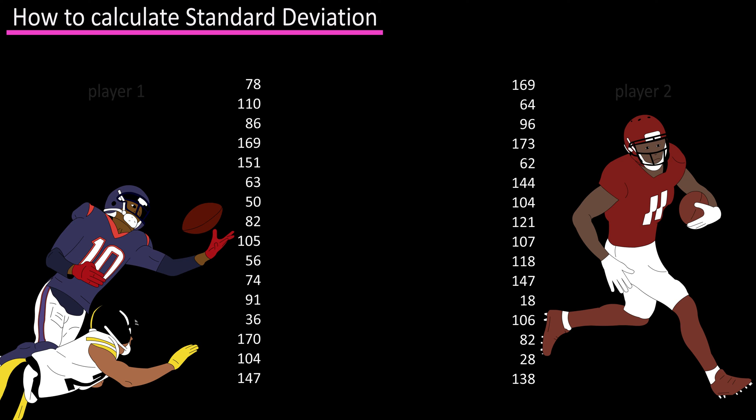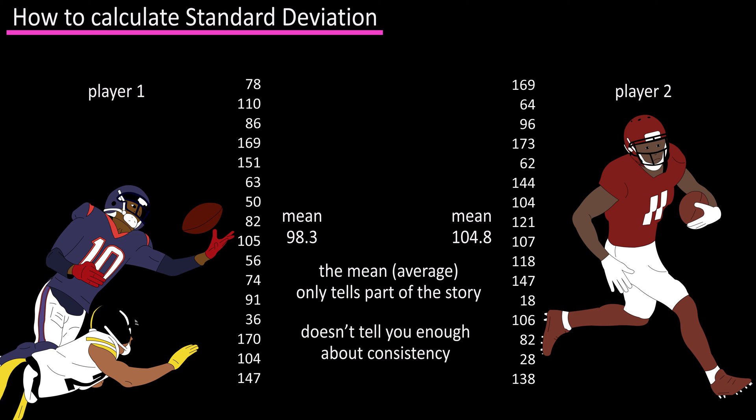You do some calculations to get their averages or means per game for the 16 games. Player one's average is 98.3 yards per game and player two averages 104.8 yards per game. But the average or mean only tells one part of the story because it does not tell you anything about consistency.